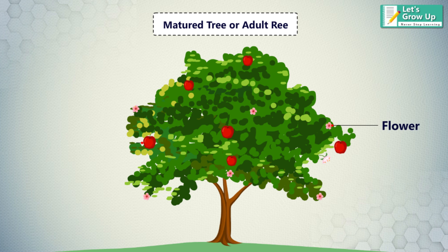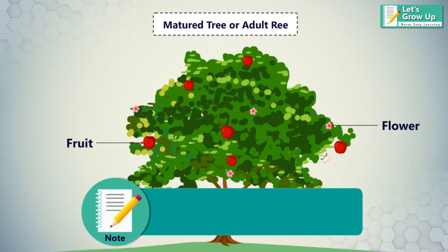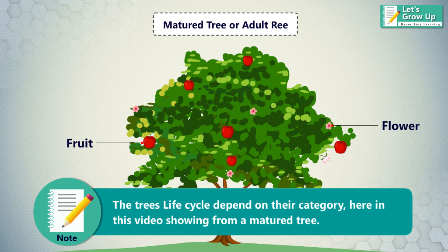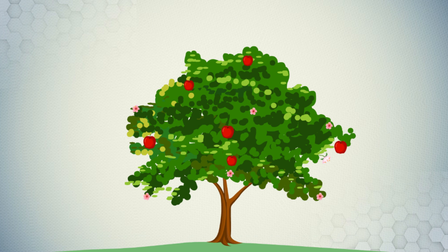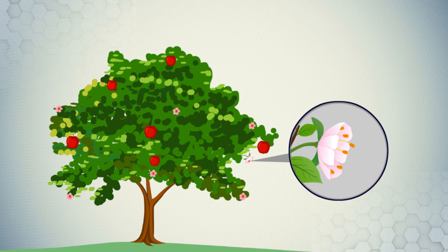A matured or adult tree gives us flowers and fruit. Note that the tree's life cycle depends on its category. In this video, we are starting from the matured tree. The first step is the matured plant, which is sexually mature and has the ability to reproduce through spores or flowers.